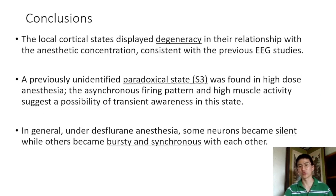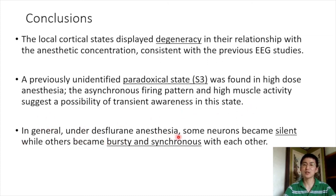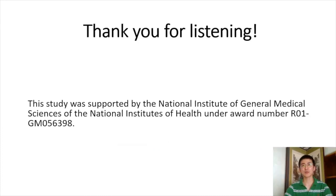In conclusion: local cortical states identified by spiking pattern displayed degeneracy in their relationship with anesthetic concentration, consistent with previous EEG studies. A previously unidentified paradoxical state, S3, was found in high-dose anesthesia — its asynchronous firing pattern and high muscle activity suggest a possibility of transient awareness. In general, under deep anesthesia some neurons became silent while others became bursty and synchronous with each other. Thank you very much.